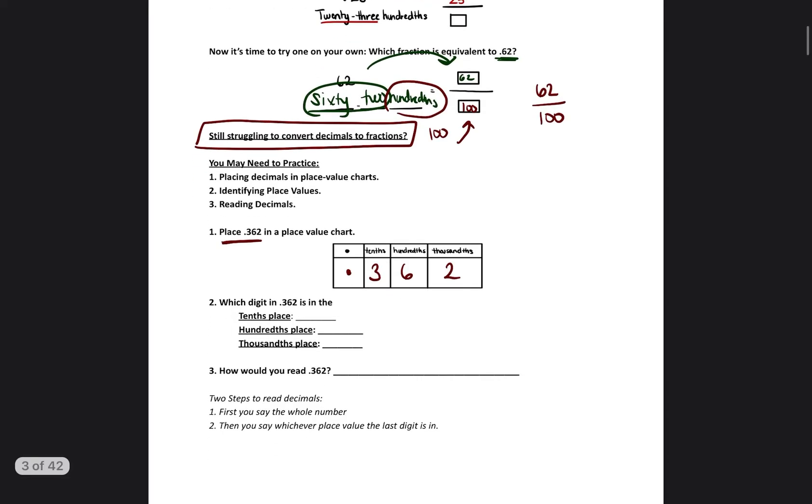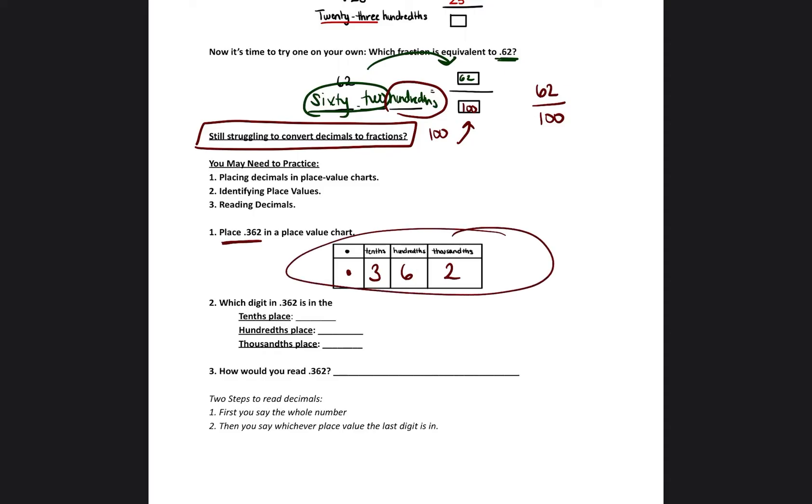Perfect. So now it's saying, which digit is in the tenths place? So now that it's in the place value chart, you just look for the tenths place. And you ask yourself, what digit is in the tenths place? Number 3. So what digit is in the hundredths place? You can look at the hundredths place and you see 6. What digit is in the thousandths place? It's 2.